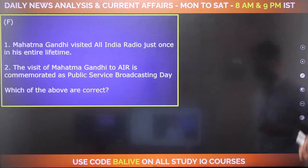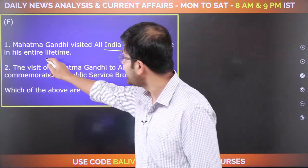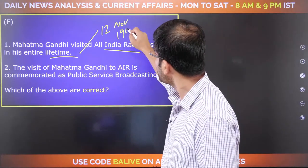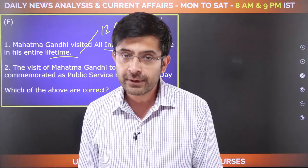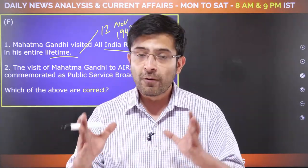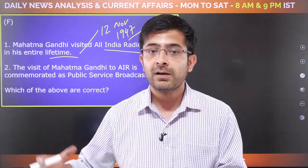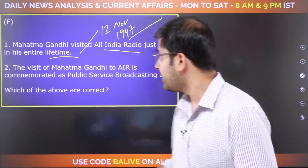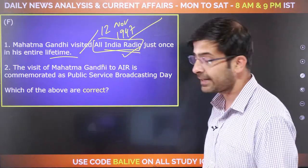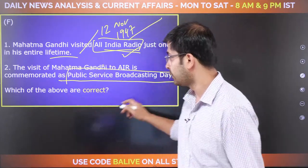Mahatma Gandhi visited AIR just once in his entire lifetime — on 12th November 1947, when he was addressing a group of refugees in Kurukshetra. He wanted to offer solace but couldn't travel there, so he used the airwaves of All India Radio to address those refugees. That day, 12th November 1947, is celebrated as Public Service Broadcasting Day. AIR is a body under Prasar Bharati, an autonomous body of the Government of India, the other constituent being Doordarshan.